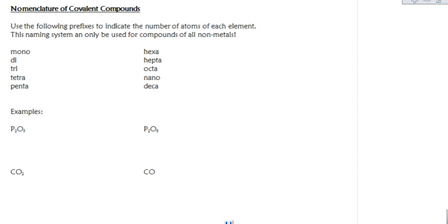These are a lot easier. Number one, covalent compounds should be all nonmetals. So you can use this naming system if the compound is covalent and it contains all nonmetals. That's important.